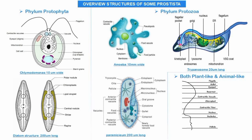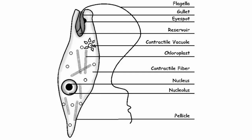Euglena has both plant and animal-like features and is a borderline between plants and animals. In its structure: a flagellum responsible for movement; a gullet where food is converted; a vacuole; an eye spot responsible for perceiving light level and direction; a reservoir for storage of nutrients; a contractile vacuole; chloroplasts that manufacture food using chlorophyll; contractile fibers involved in cell division; a nucleus as control center; a nuclear envelope surrounding the nucleus; and a pellicle, which enables exceptional flexibility and controls what enters and exits the cell.